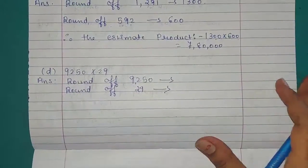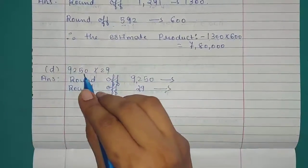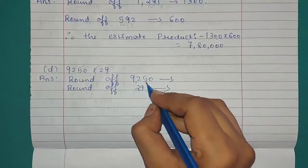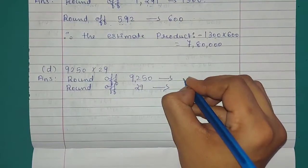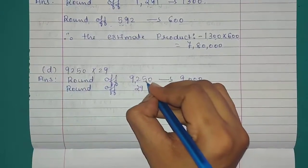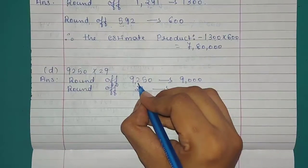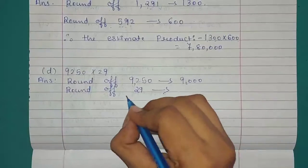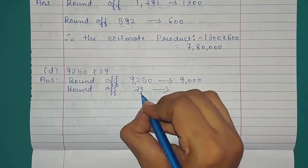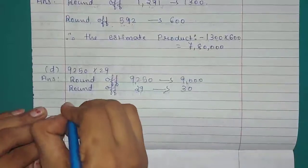Question D: 9,250 multiplied by 29. We will round off each number. Rounding off 9,250 to the nearest thousand: the thousands place value is 9, and the digit next to 9 is 2, which is less than 5. So the answer is 9,000. Rounding off 29 to the nearest tens: the tens place value is 2, and the digit next to 2 is 9, which is greater than 5, so we add 1. The answer is 30.